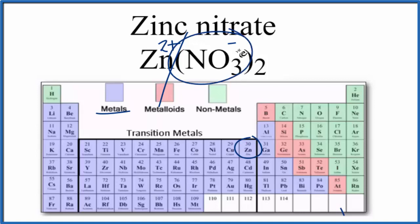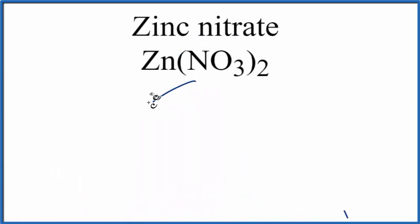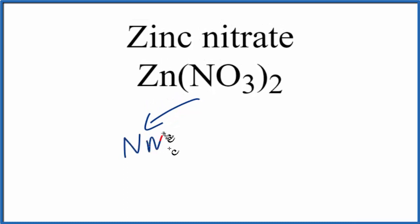Let's talk briefly about the nitrate ion. We said nitrogen, that's a nonmetal, and then oxygen, that's also a nonmetal. So when you have a nonmetal plus a nonmetal, that's going to give you a covalent bond.